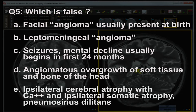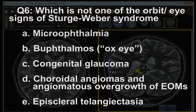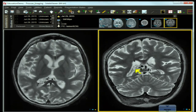Question five continues — D) angiomatous overgrowth of soft tissue and bone of the head; E) ipsilateral cerebral atrophy with calcification and ipsilateral somatic or body atrophy with pneumosinus dilatans. Question number six — which is NOT one of the orbit/eye signs of Sturge-Weber syndrome: A) small eye or micro-ophthalmia; B) large eye or ox eye buphthalmos; C) congenital glaucoma; D) choroidal angiomas and angiomatous overgrowth of the extraocular muscles; E) episcleral telangiectasia.